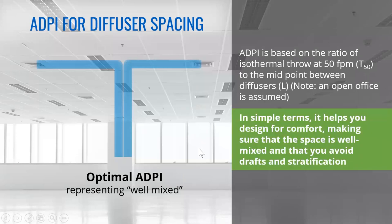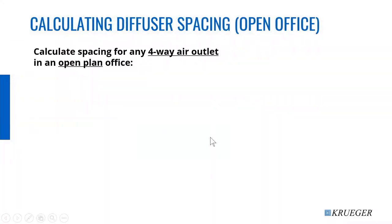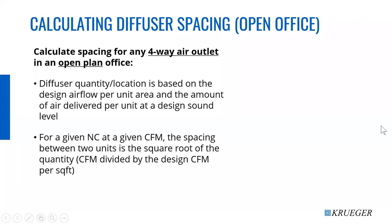In simple terms, the higher the ADPI — the higher percentage of points that meet this performance index — the more well-mixed a space is and the more uniform it should be. Assuming the thermostat is set correctly, this translates to comfort. In doing catalog preparation, I stumbled upon an interesting equation for any four-way air outlet in an open plan office. It's a simple calculation: take the design airflow per diffuser divided by the airflow per unit area at design and take the square root of that value. That is the separation distance.